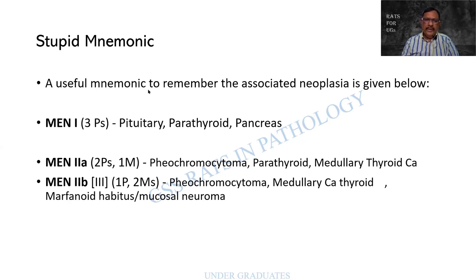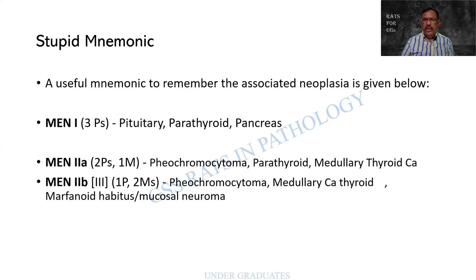MEN2a consists of pheochromocytoma, parathyroid hyperplasia, and medullary thyroid carcinoma. MEN2b has pheochromocytoma, medullary carcinoma of the thyroid, and a marfanoid habitus or mucosal neuromas. MEN2b has later been changed to MEN3.